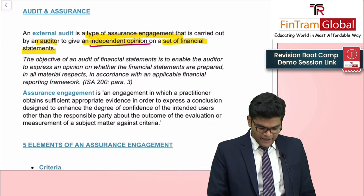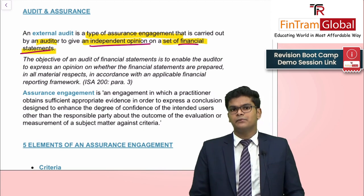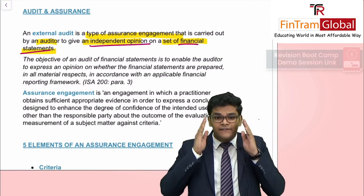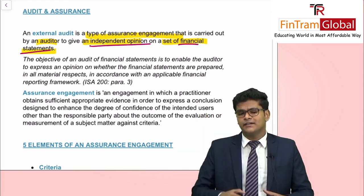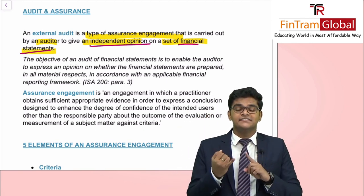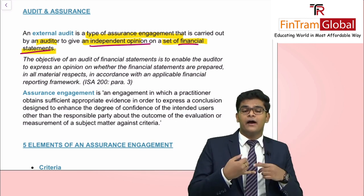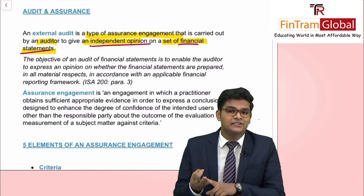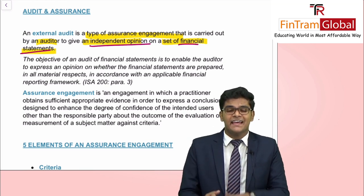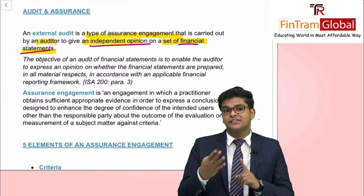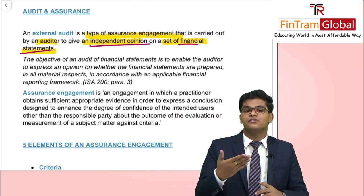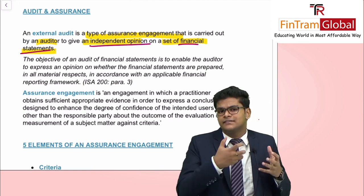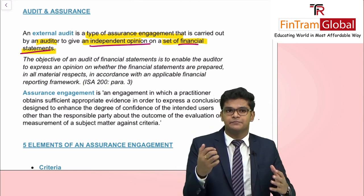When we talk about financial statements, there are five documents involved: the statement of profit and loss and other comprehensive income, the statement of financial position, the statement of cash flows, the statement of changes in equity, and the notes to financial statements.